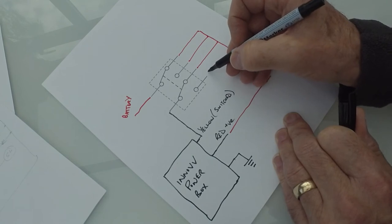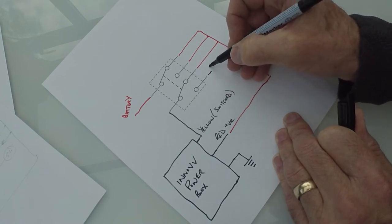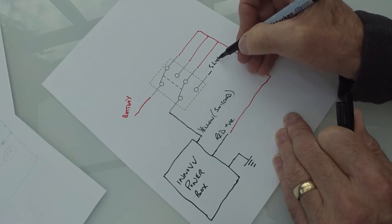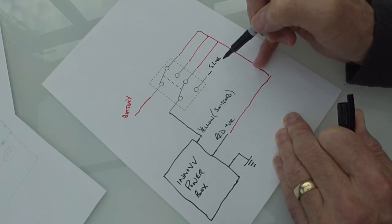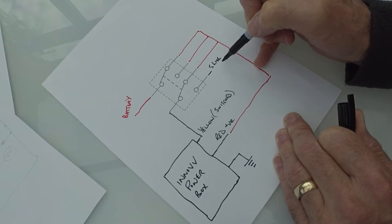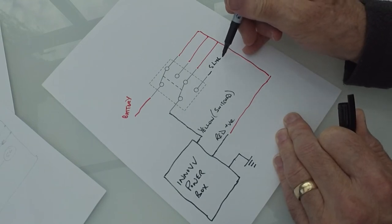And this one goes to your switched live wire somewhere on the bike. I use the tail light in my case, which only comes on when the ignition is on.